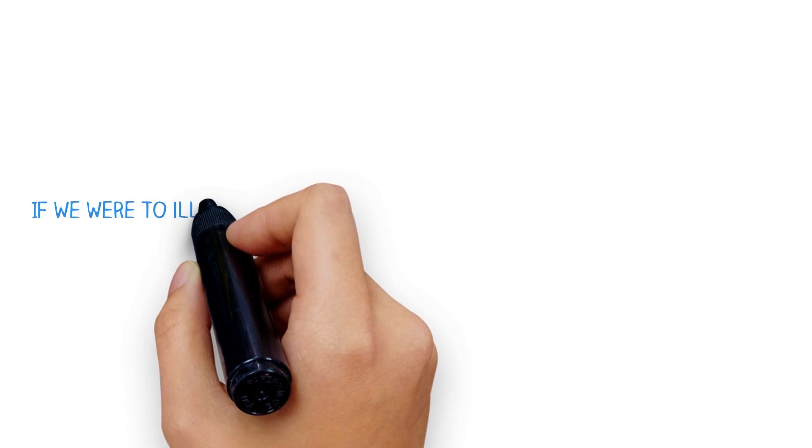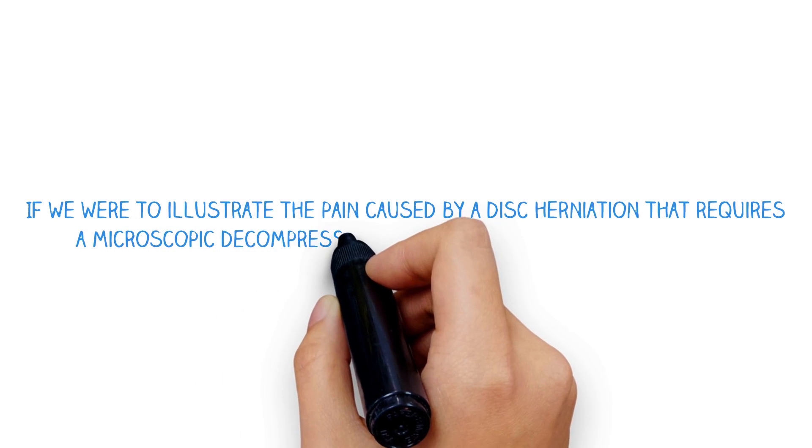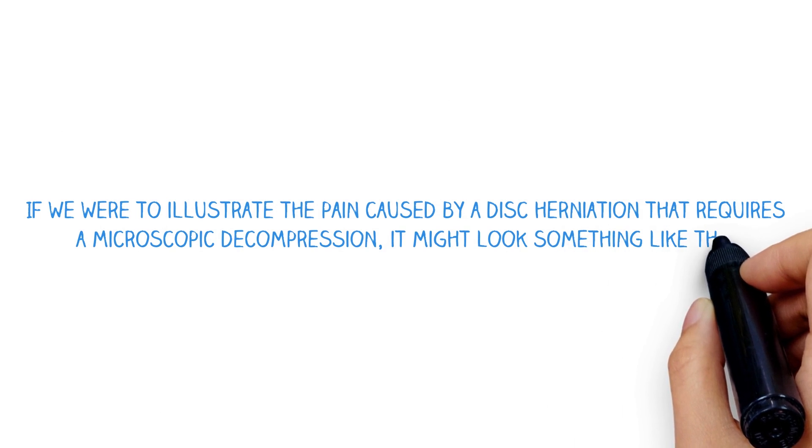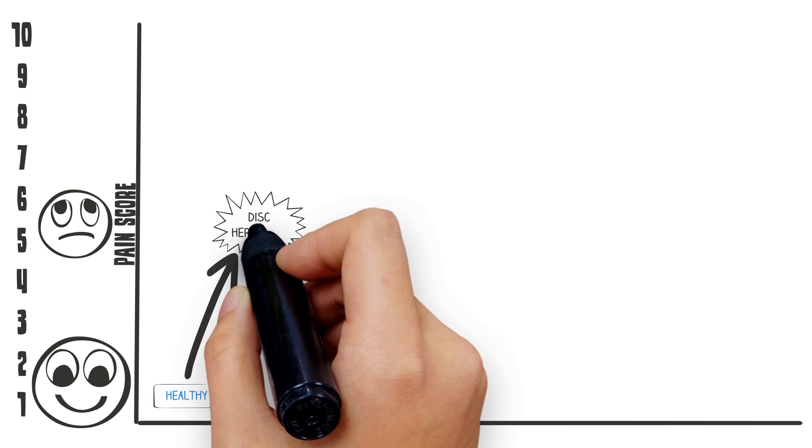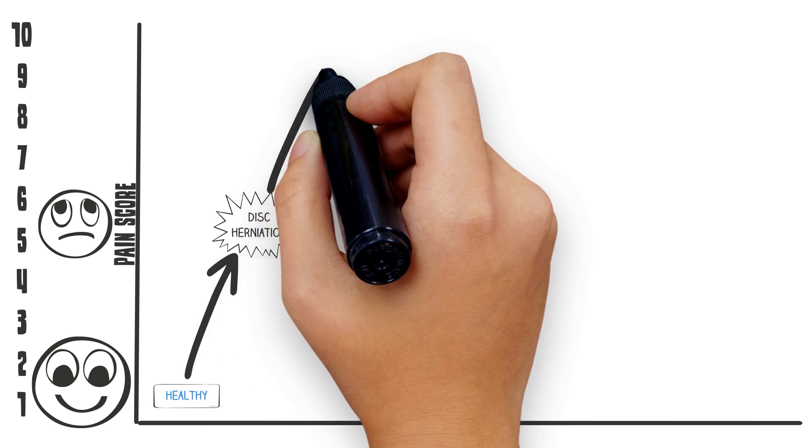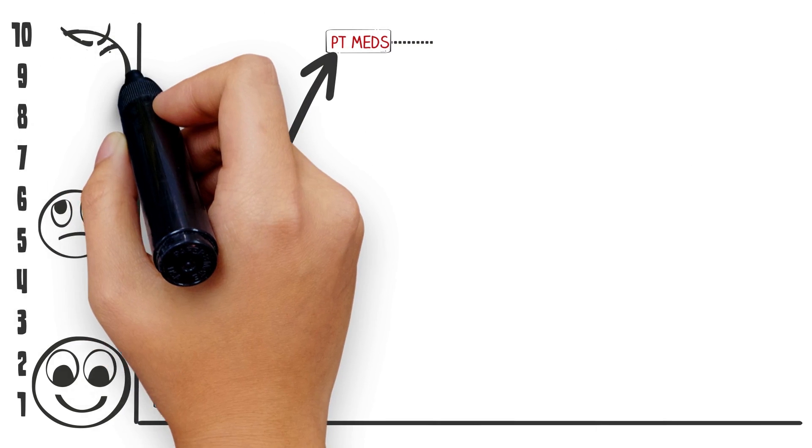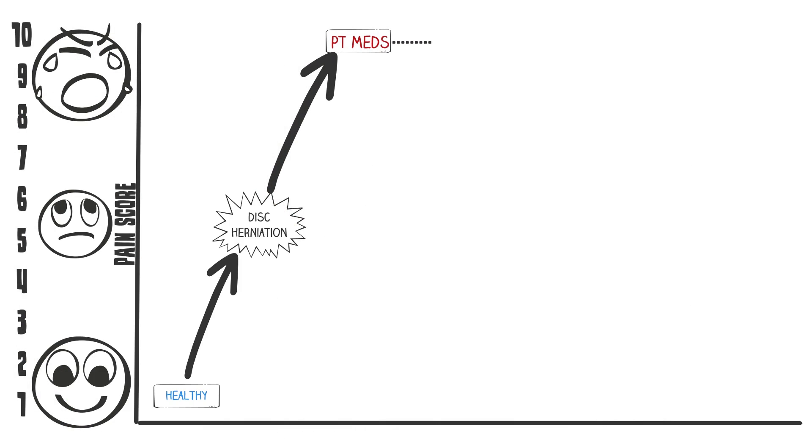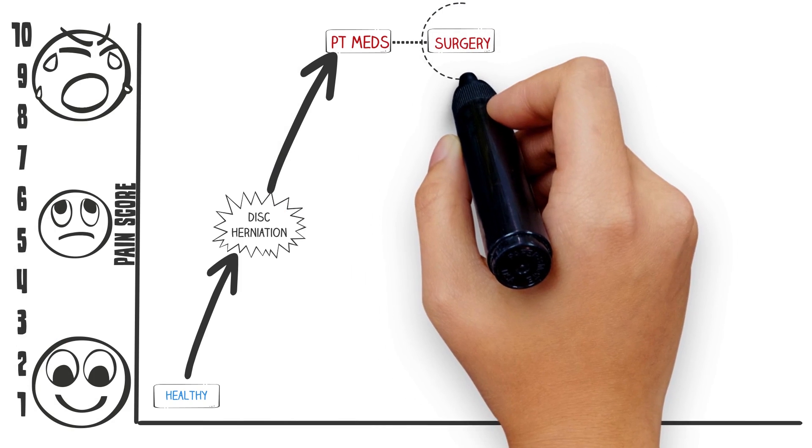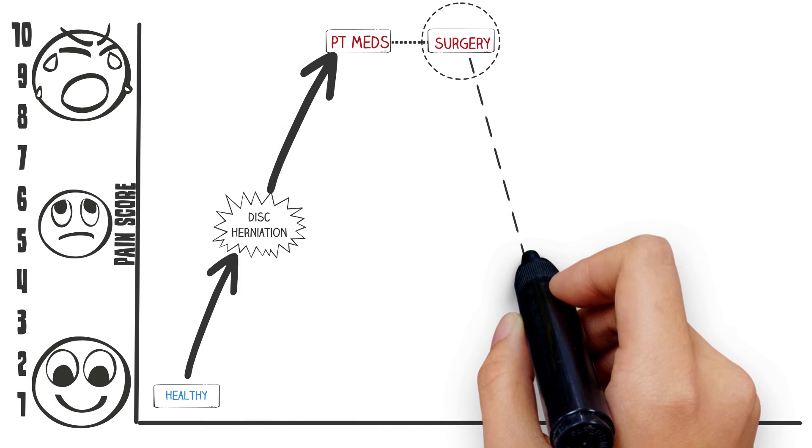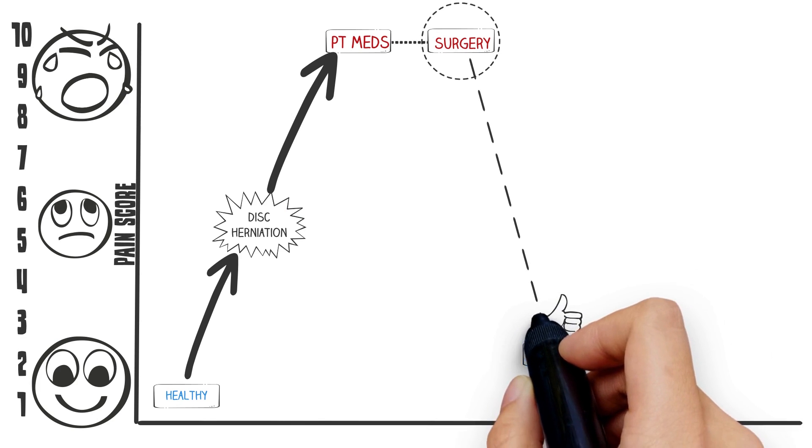If we were to illustrate the pain caused by a disc herniation that requires a microscopic decompression, it might look something like this. The nerve root is happy until a disc herniation squeezes the nerve root. Anti-inflammatory medications, muscle relaxants, and physical therapy help decrease the pain. But the pain keeps coming back. This herniation is bad enough that it needs an operation. On the day of the operation, the pressure is finally removed, and the nerve root breathes a sigh of relief.